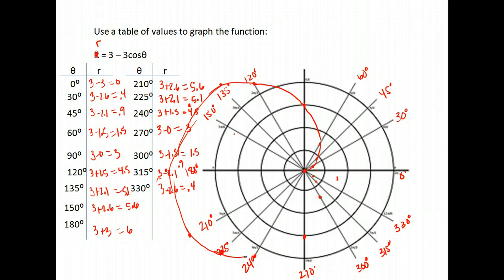And I wish my graph had been big enough. Okay so that is the shape that we get from 3 minus 3 cosine.